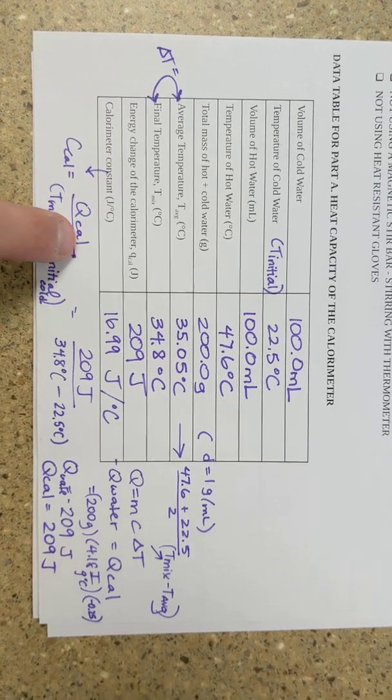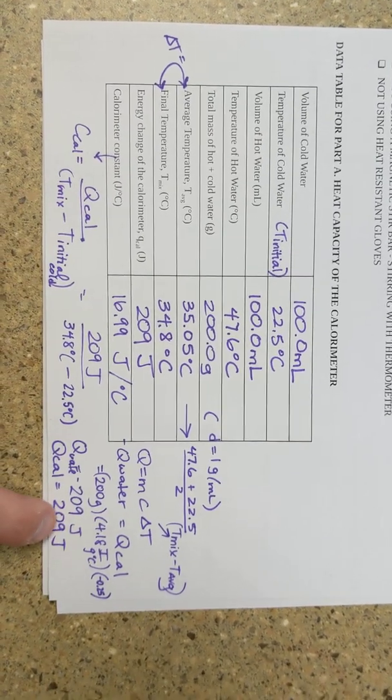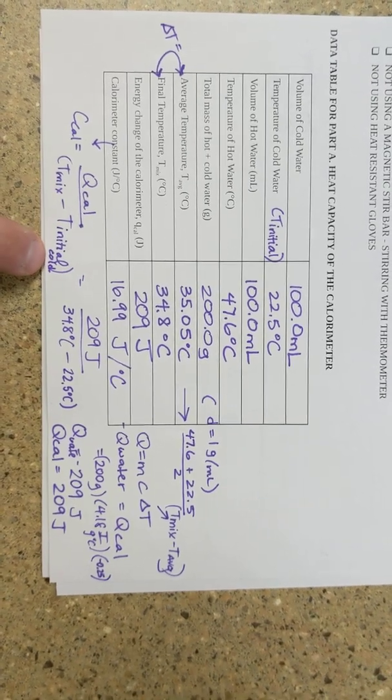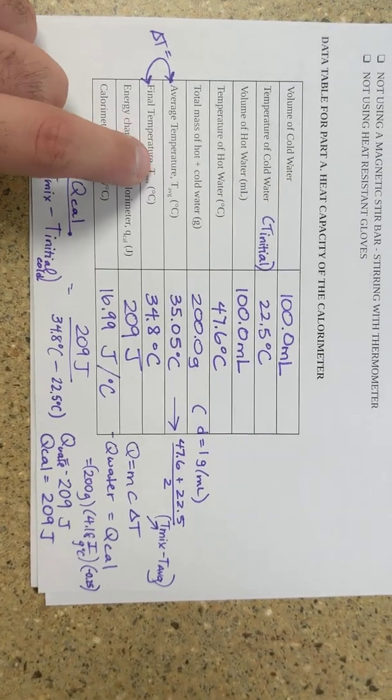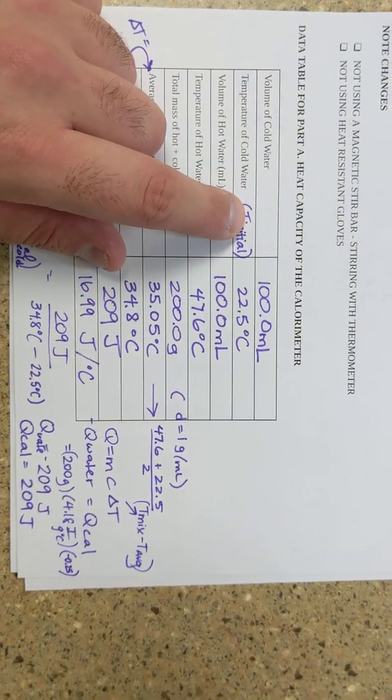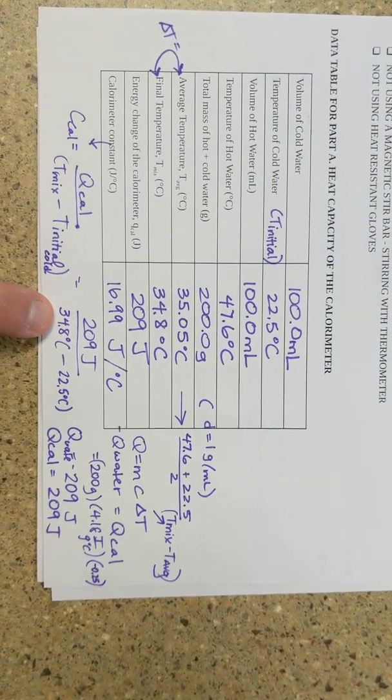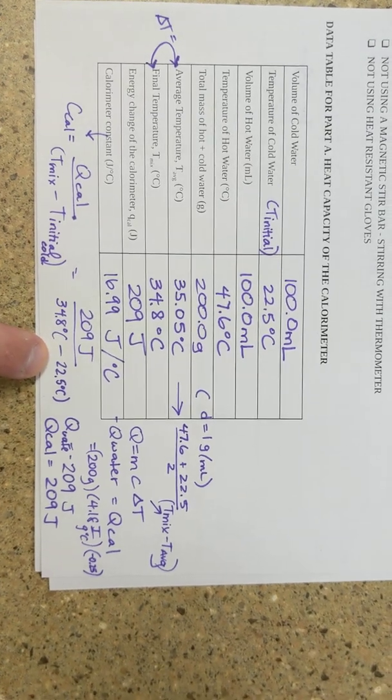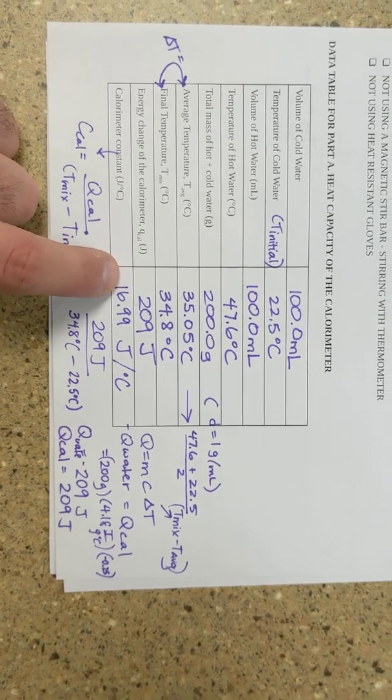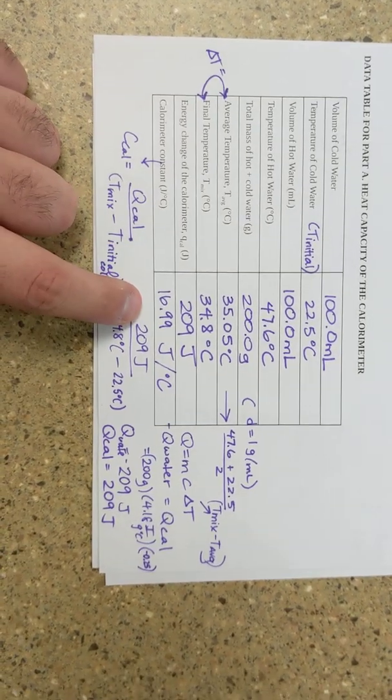And then if I want the calorimeter constant, I'm going to take Q cal, which I just determined, and divide it by T mix minus T initial. Now T mix was the final temperature. T initial is just going to be the initial temperature of the cold water. So T mix 34.8 minus 22.5. I did 209 over 34.8 minus 22.5. And I got about 16.99 or 17.